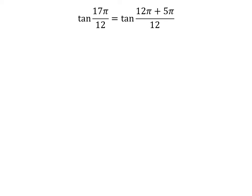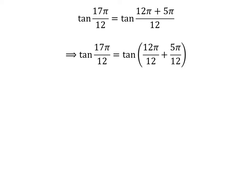17 times pi is equal to 12 times pi plus 5 times pi. So tangent of 17 times pi upon 12 is equal to tangent of (12 times pi plus 5 times pi) upon 12. The fraction can be expressed as the sum of two fractions: tangent of (12π/12 + 5π/12). Cancelling out the common factor gives us tangent of 17π/12 is equal to tangent of pi plus 5 times pi upon 12.